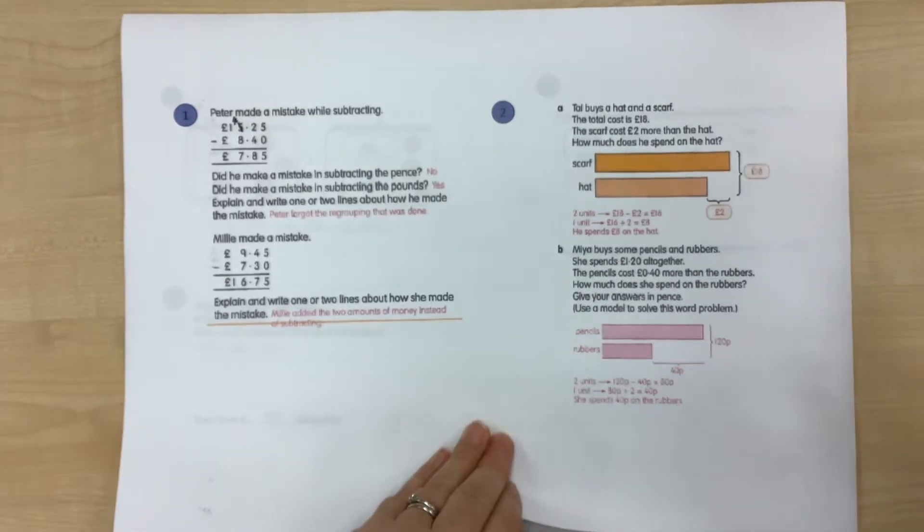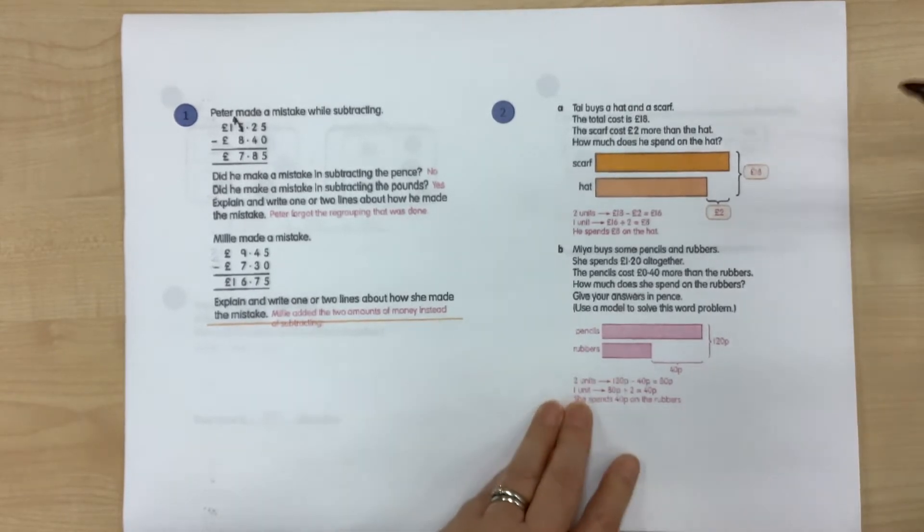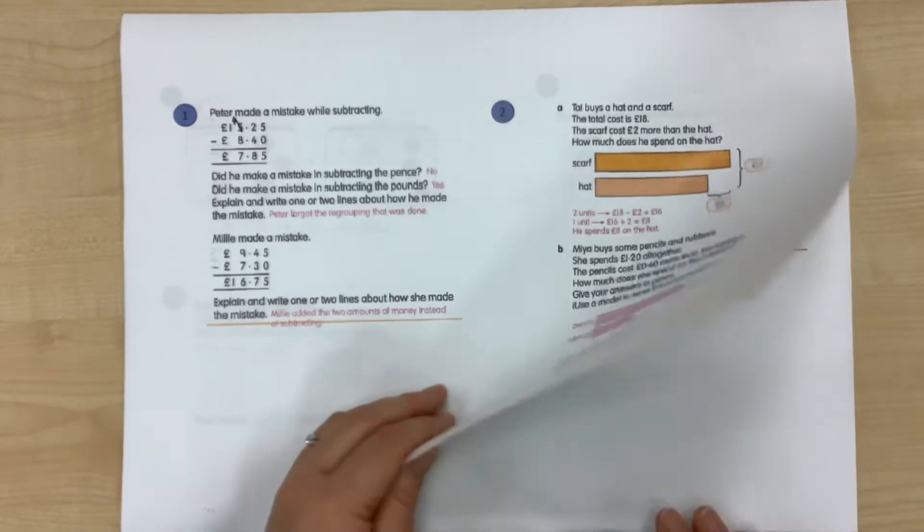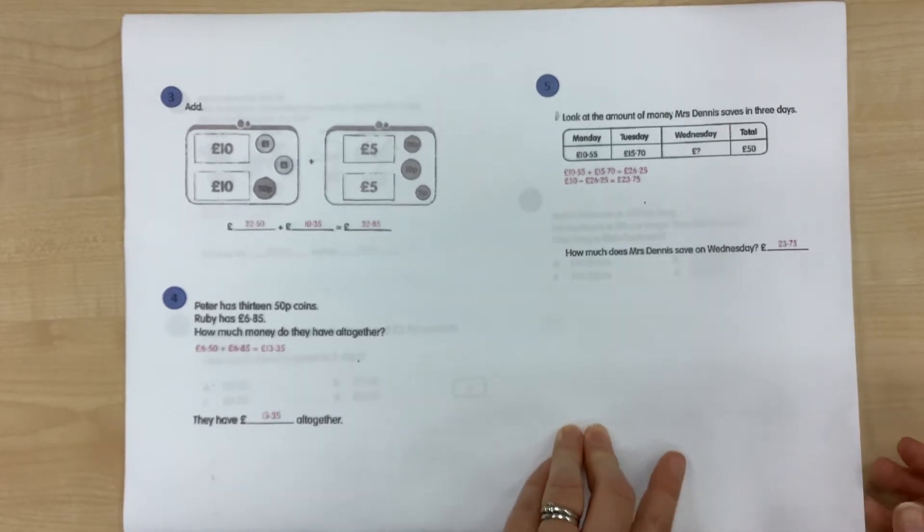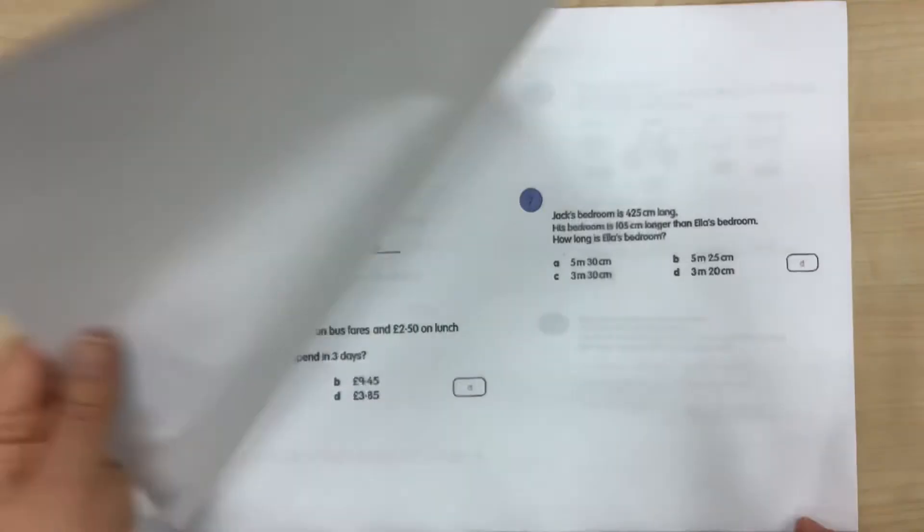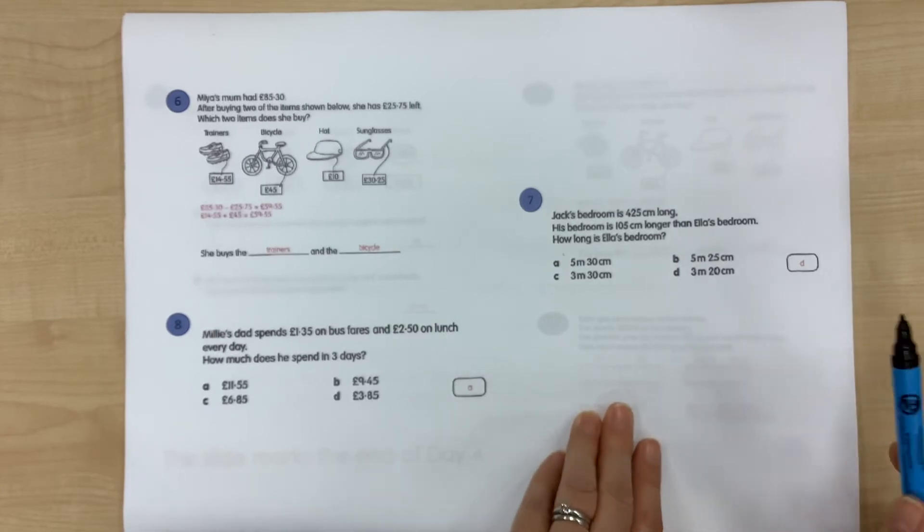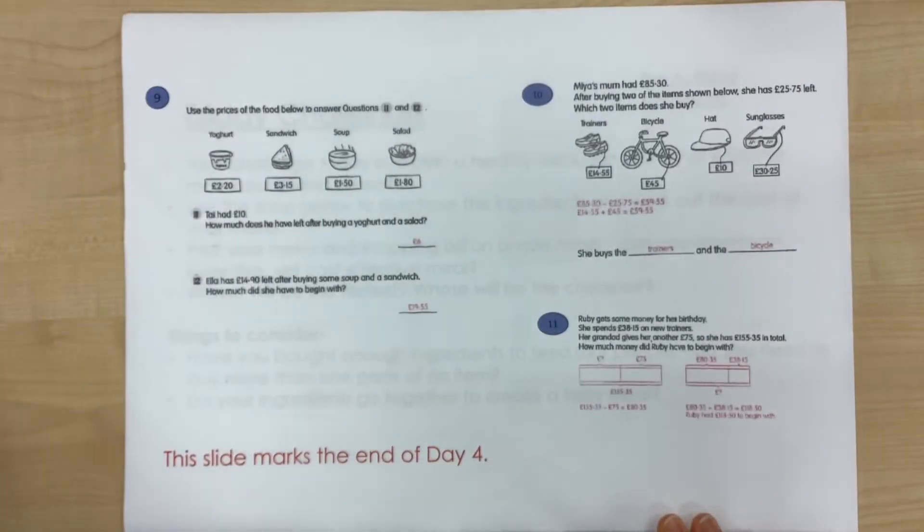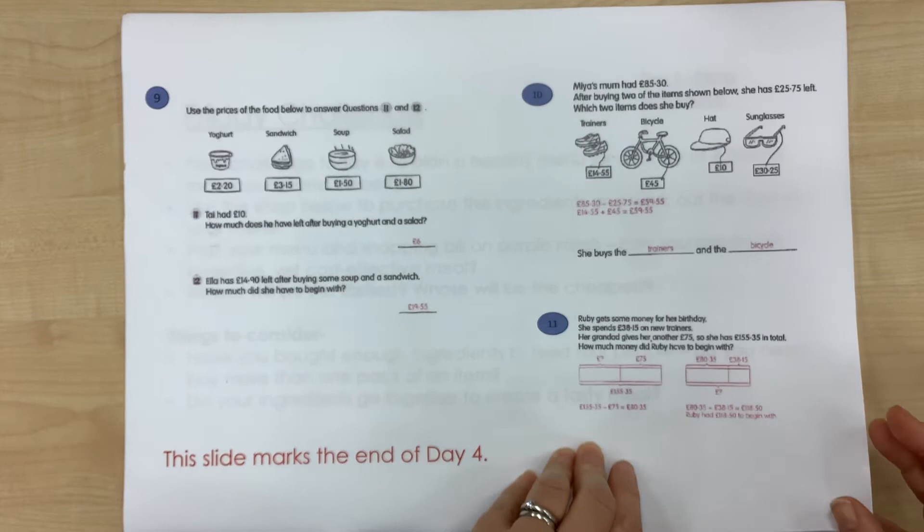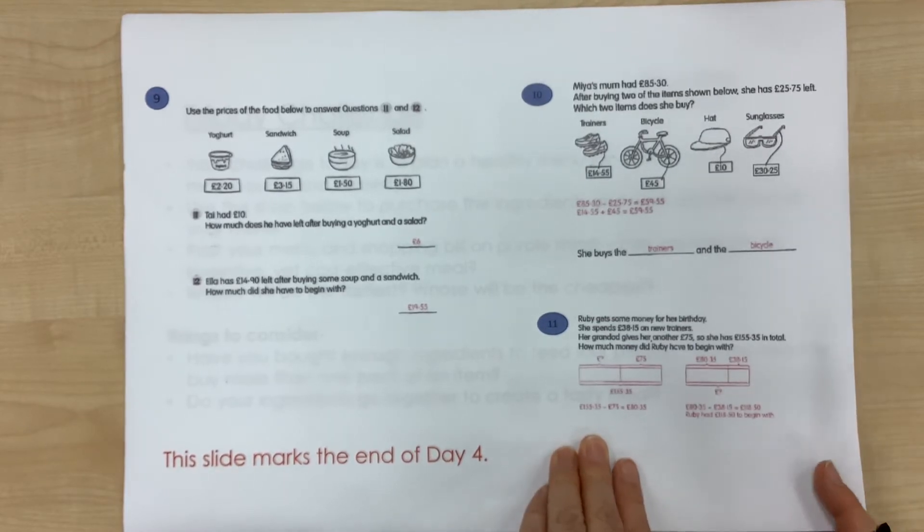We've got some word problems with bar models, and hopefully you were able to see that it was a comparison bar model that you needed to do, and that this was a two-step word problem. And then we had some of the revision questions where we were adding amounts of money and some multiple choice questions. There's a measure one in here. I'm not quite sure how that's ended up in there, but hopefully you were able to answer that. We're doing measure next week. And so that comes to the end of the questions. Check your answers and let us know if you had any problems.